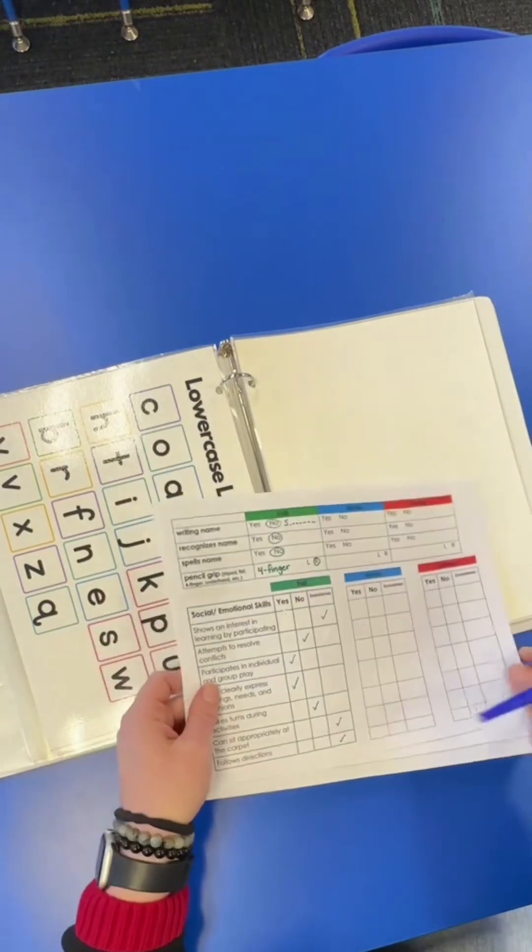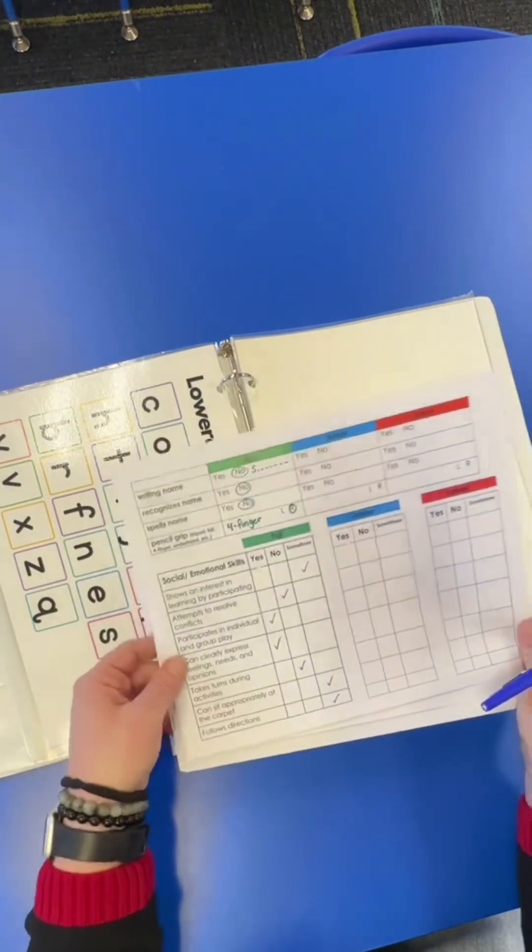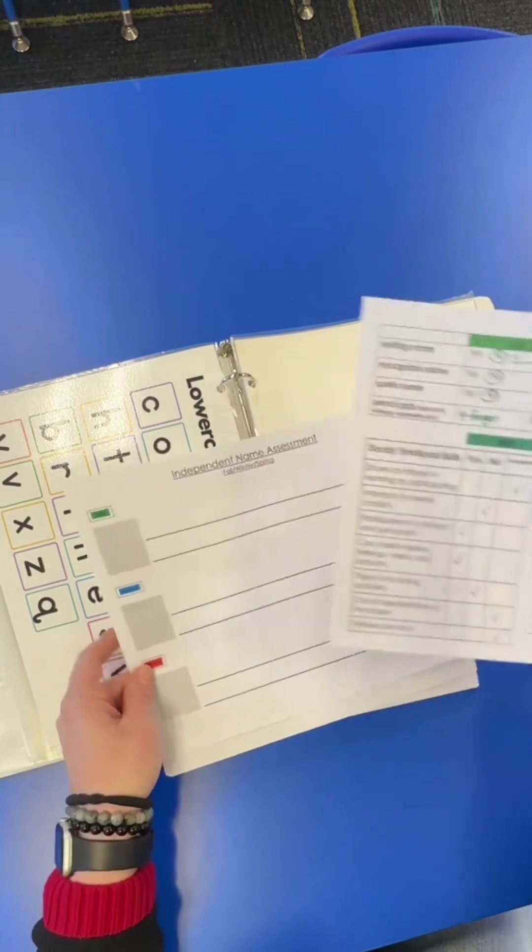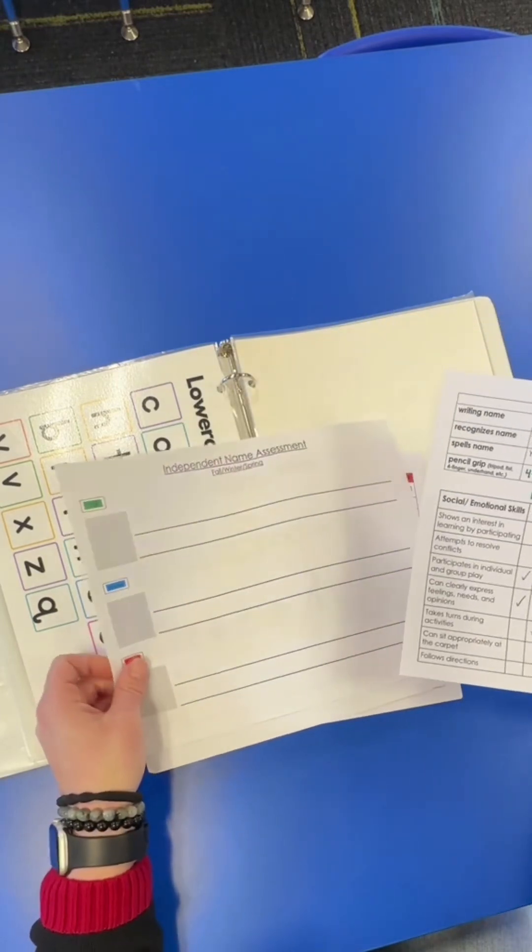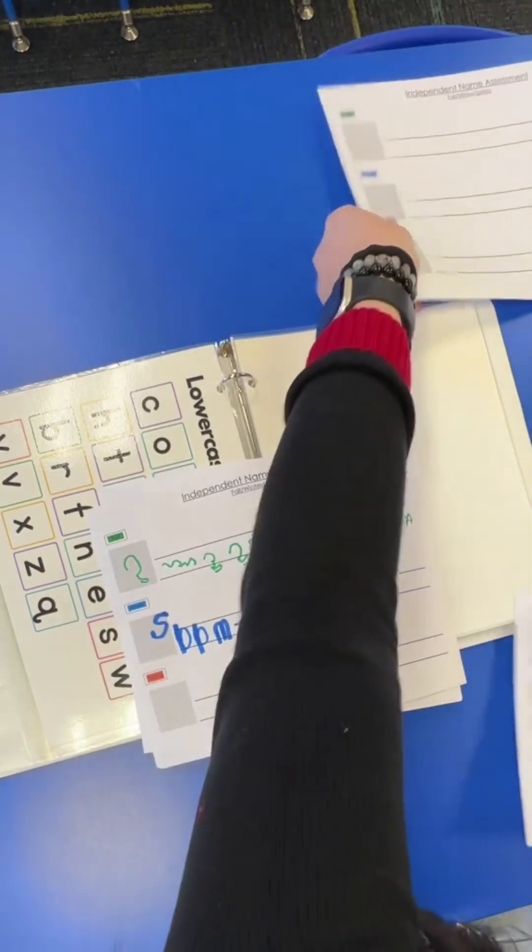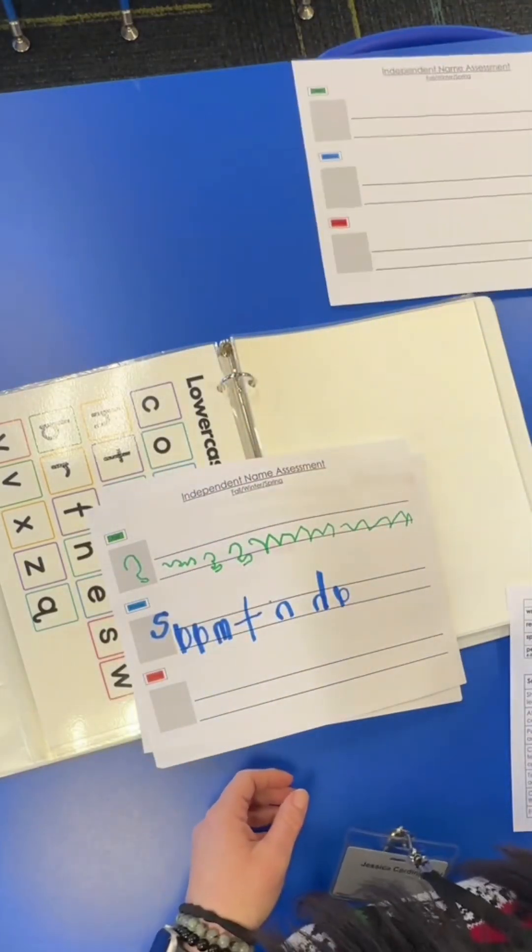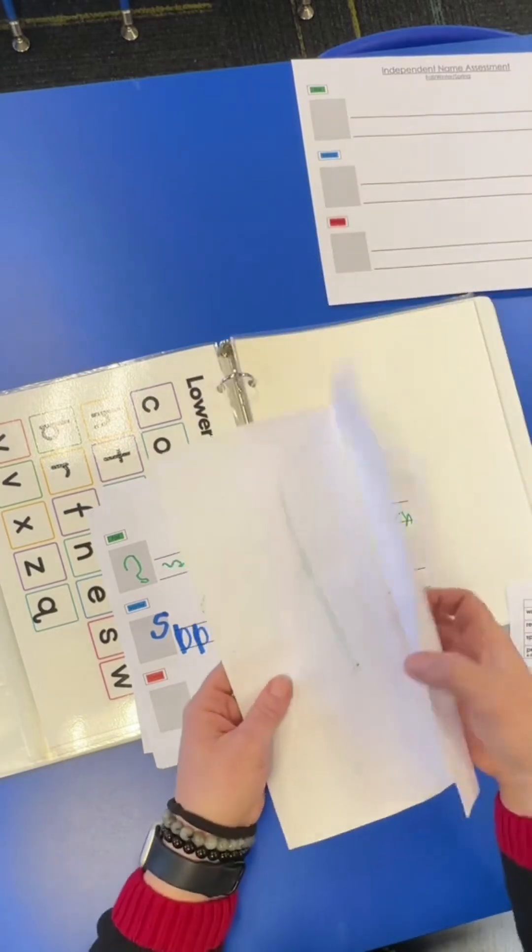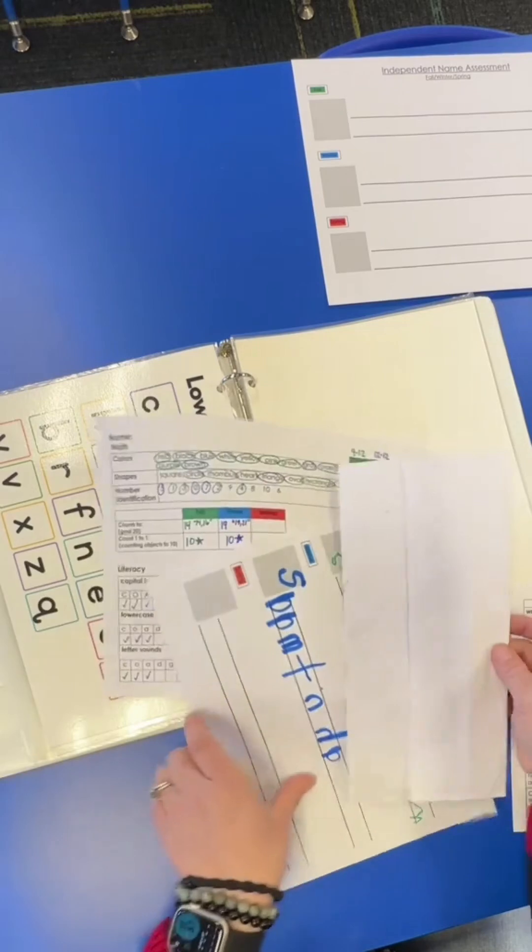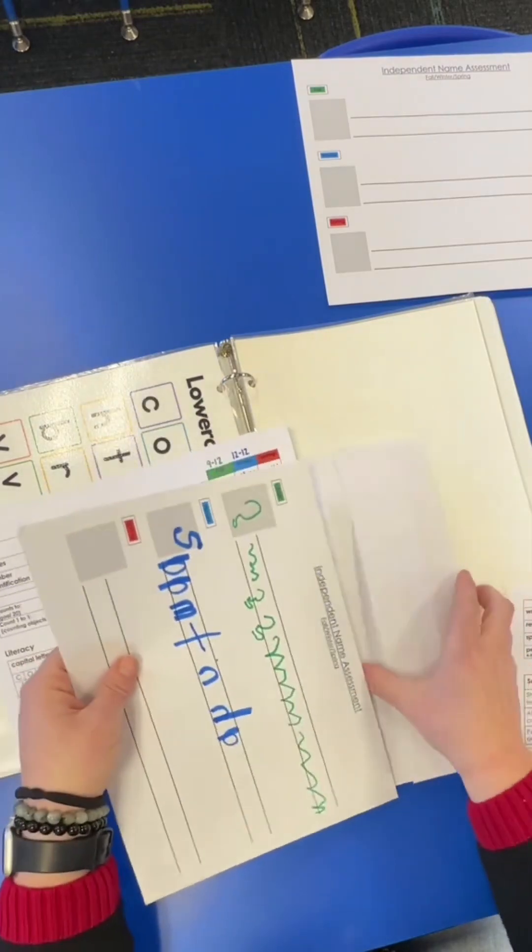Next, we're moving on to name writing and social emotional skills. Name writing is something that we really focus on in preschool, so we often see really big results from the beginning of the year to the middle of the year. I pulled this name example out because I was particularly proud of this student. She doesn't have her letters in order, but she does have all of the letters in her name.